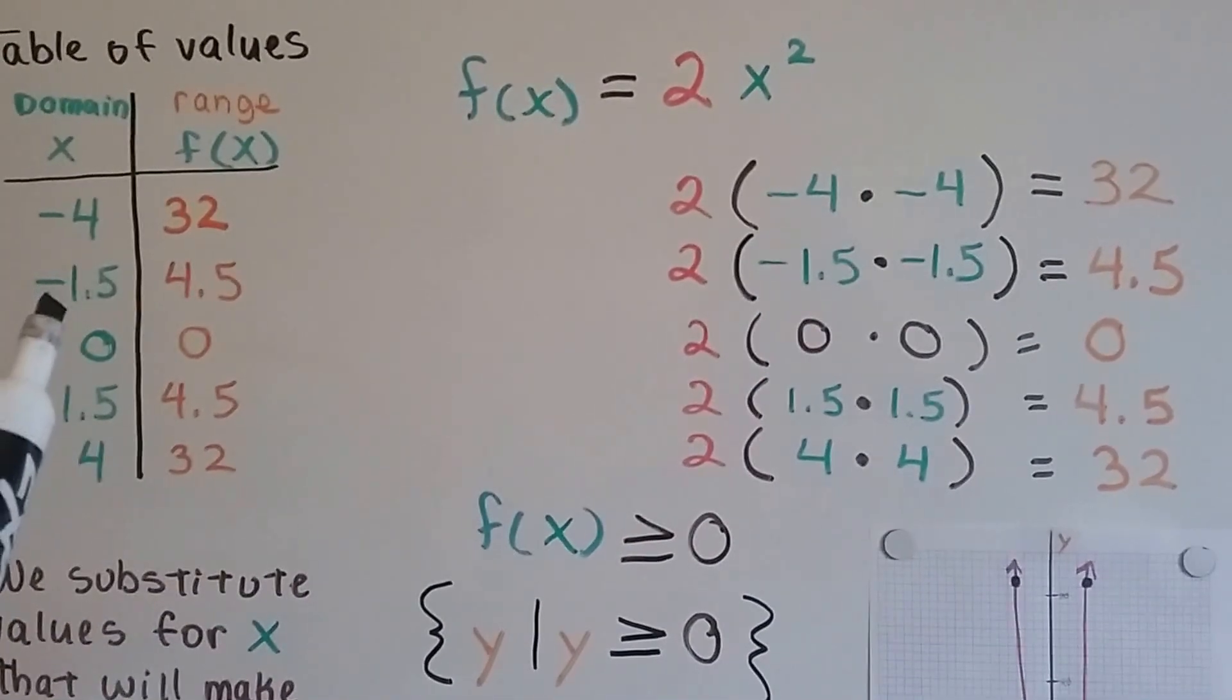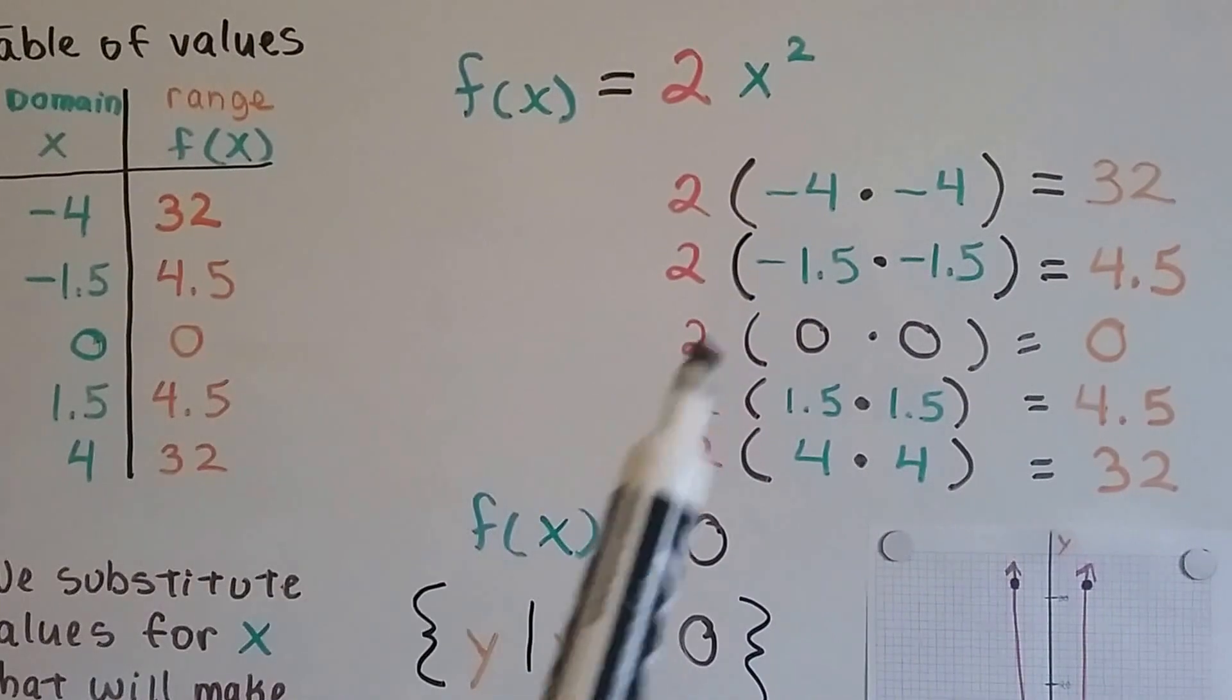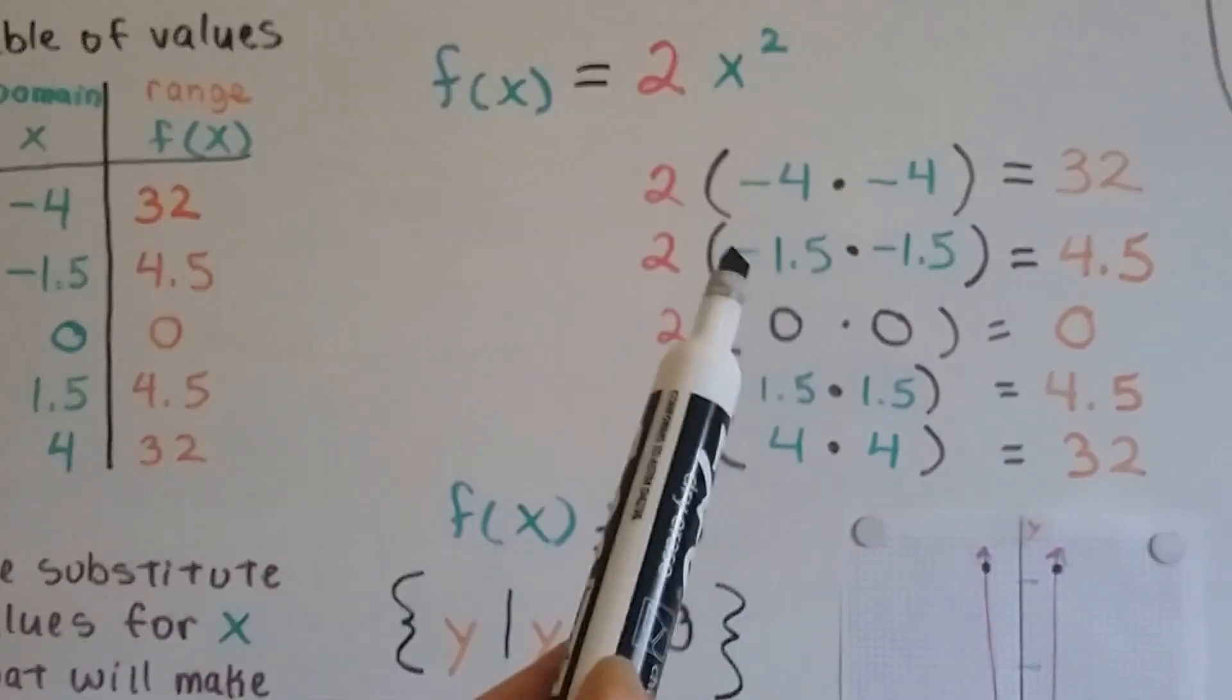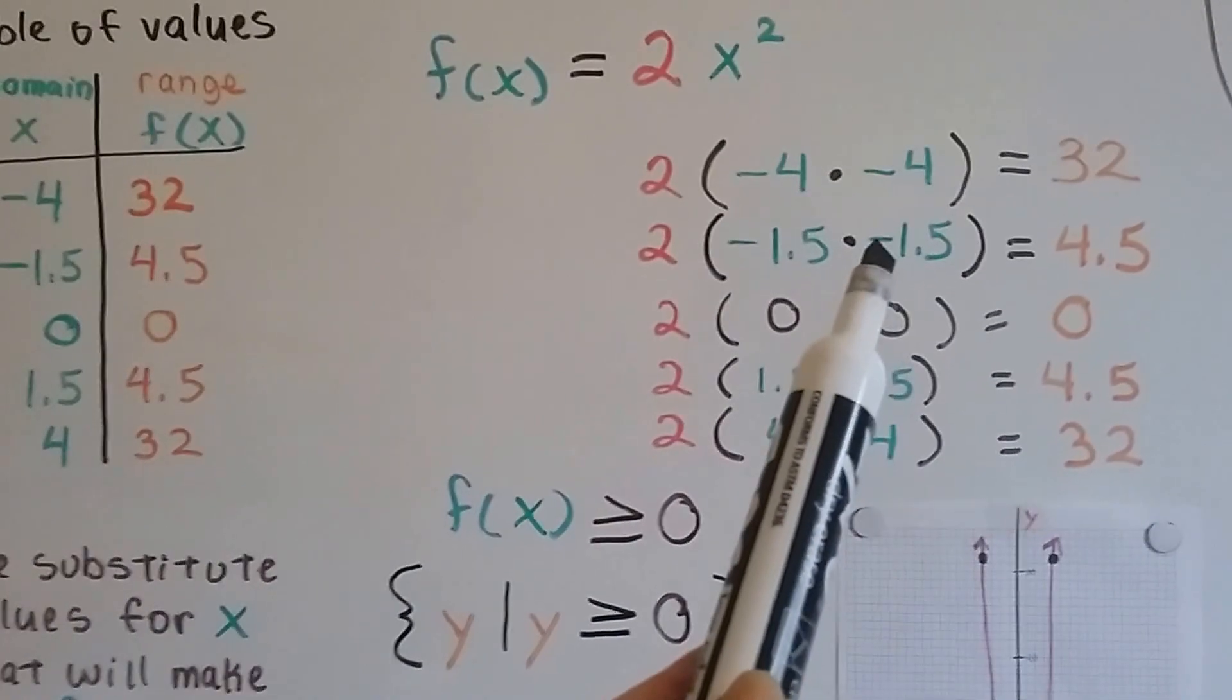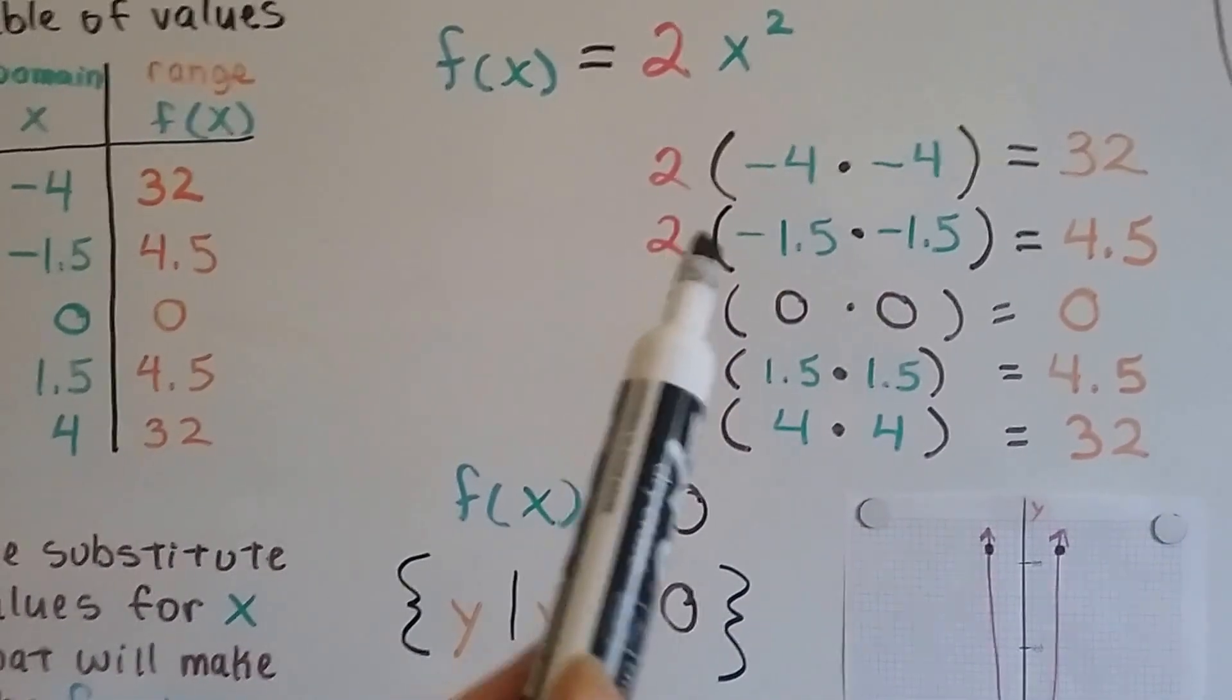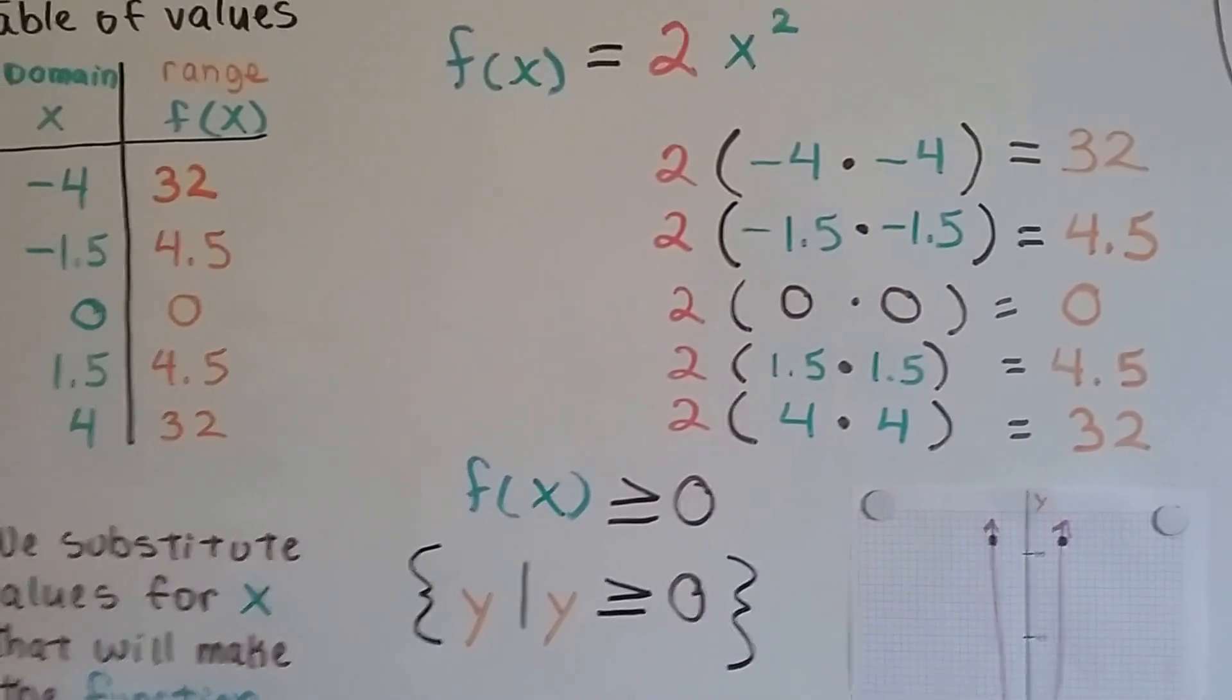And if x is a negative 1.5, that means we have negative 1.5 times negative 1.5. That's going to give us a positive number because it's two negatives. And we multiply that by 2 and we get 4.5. See?